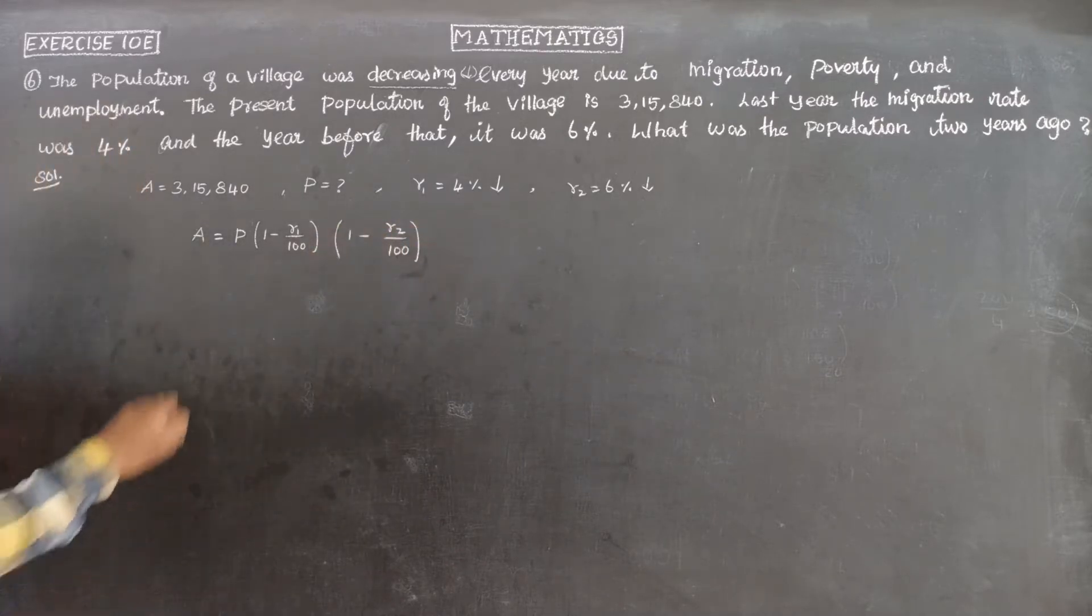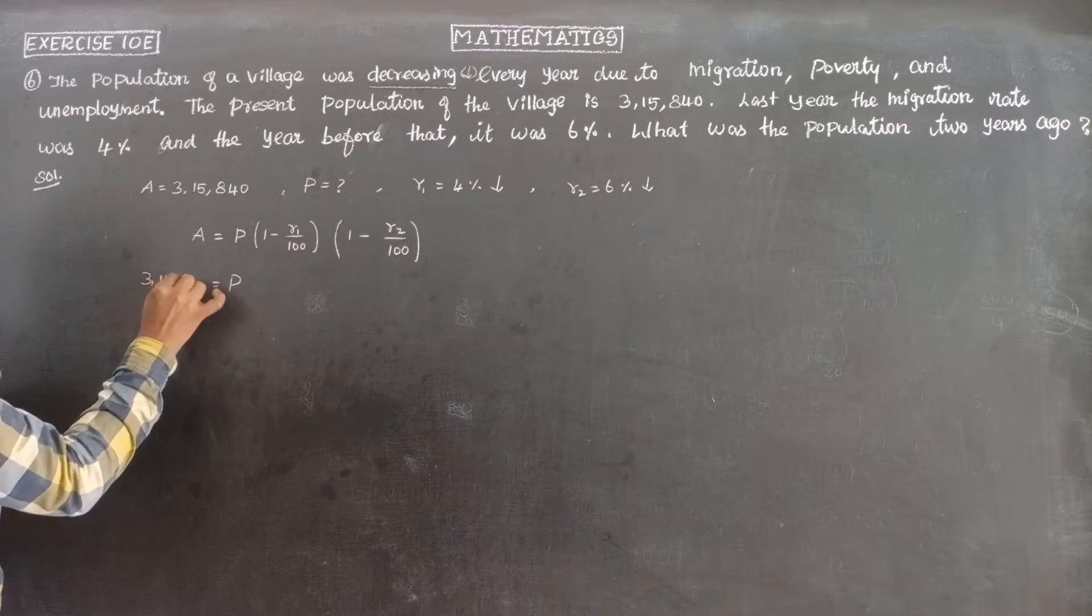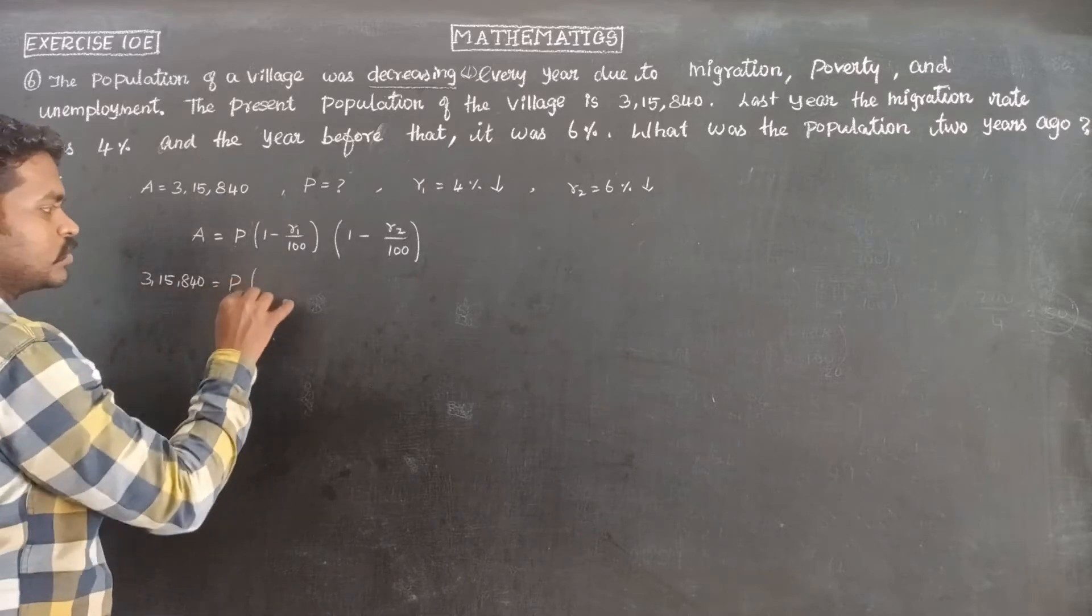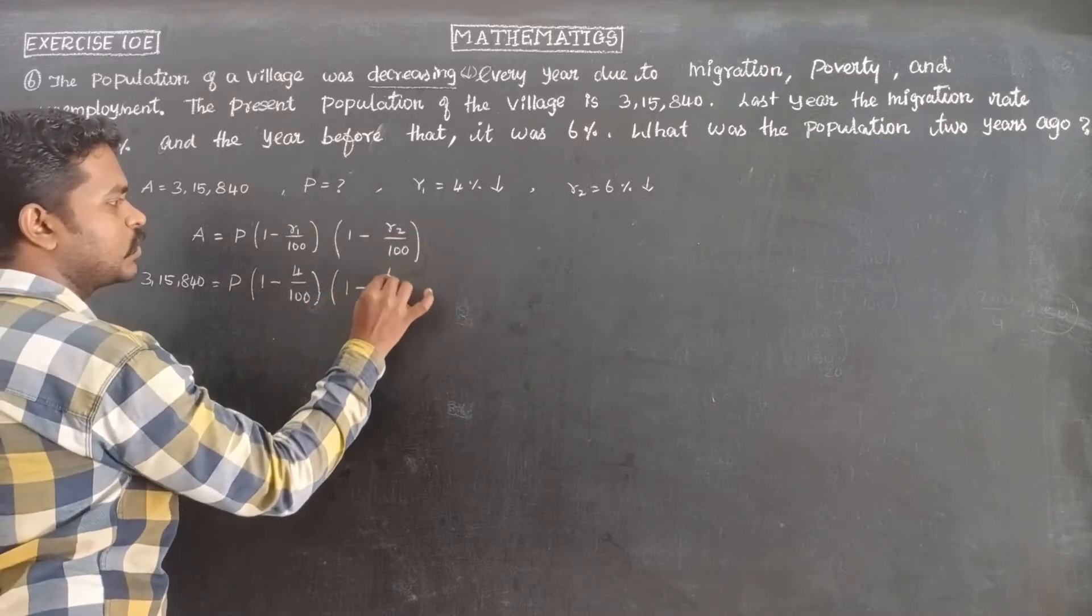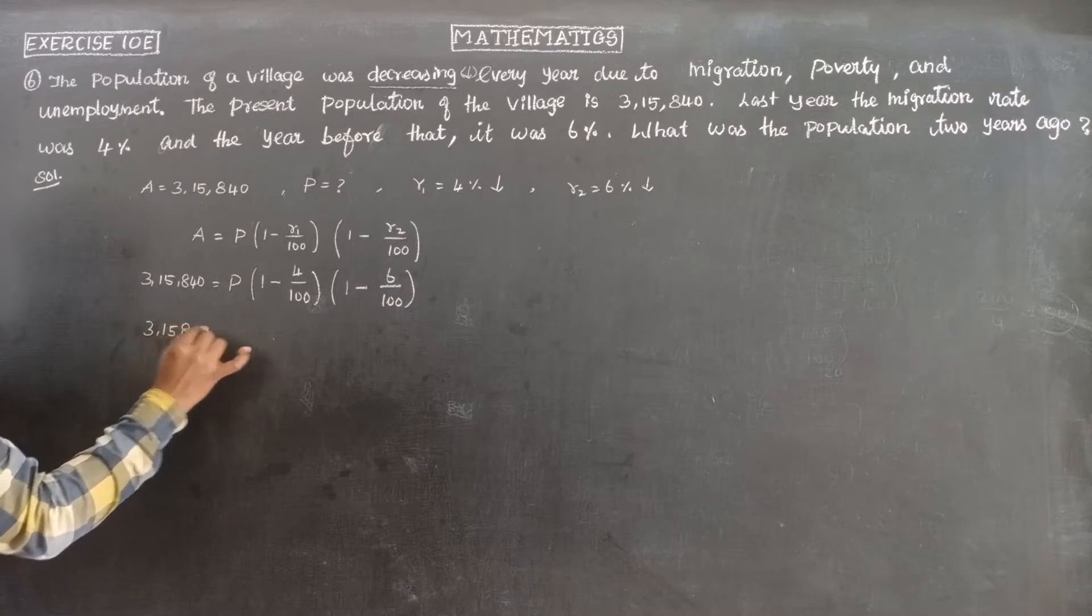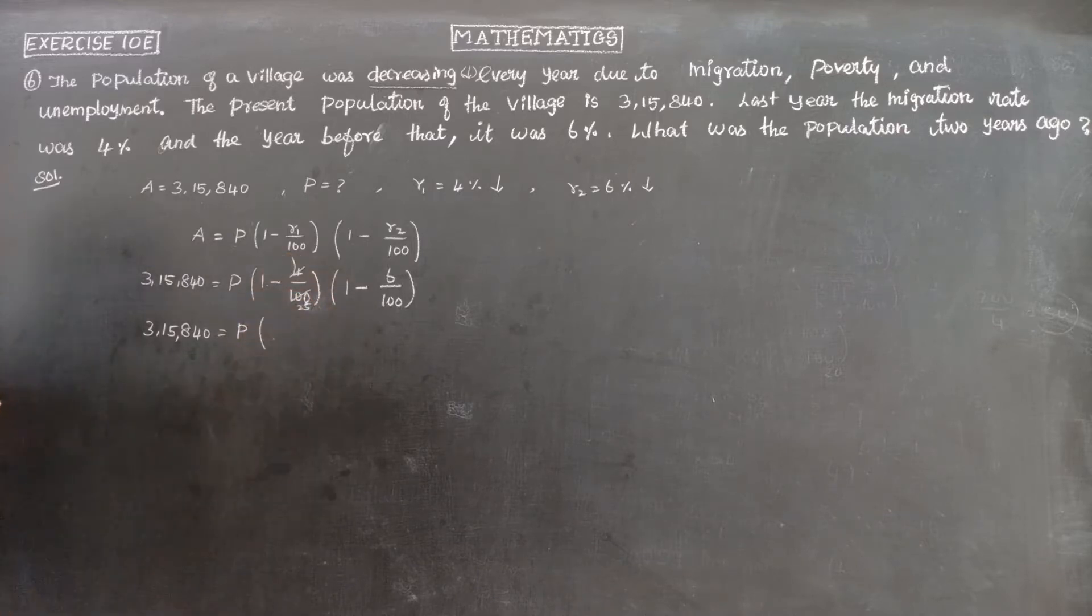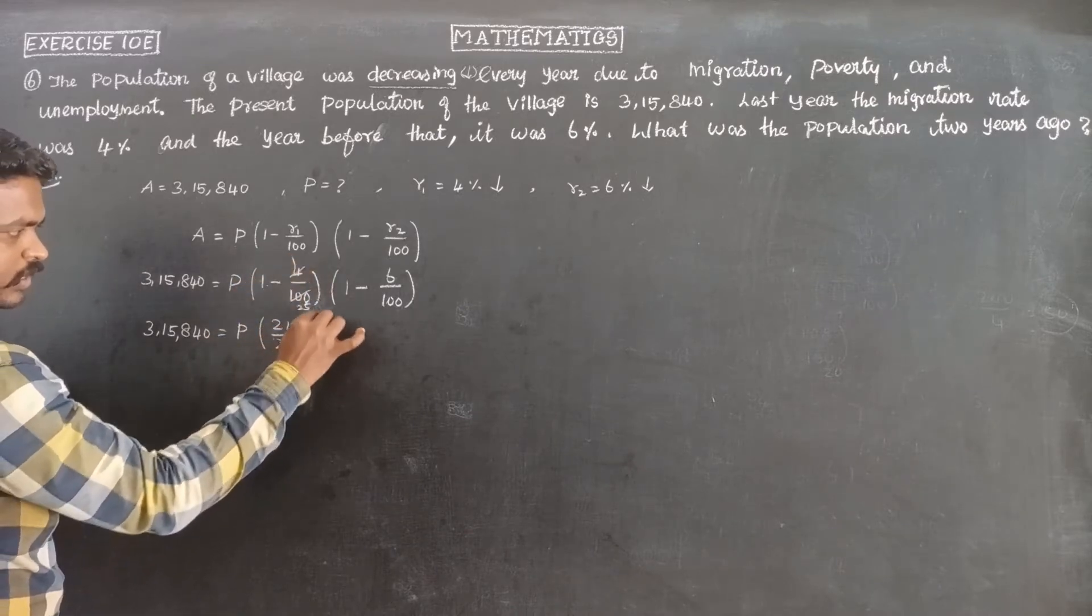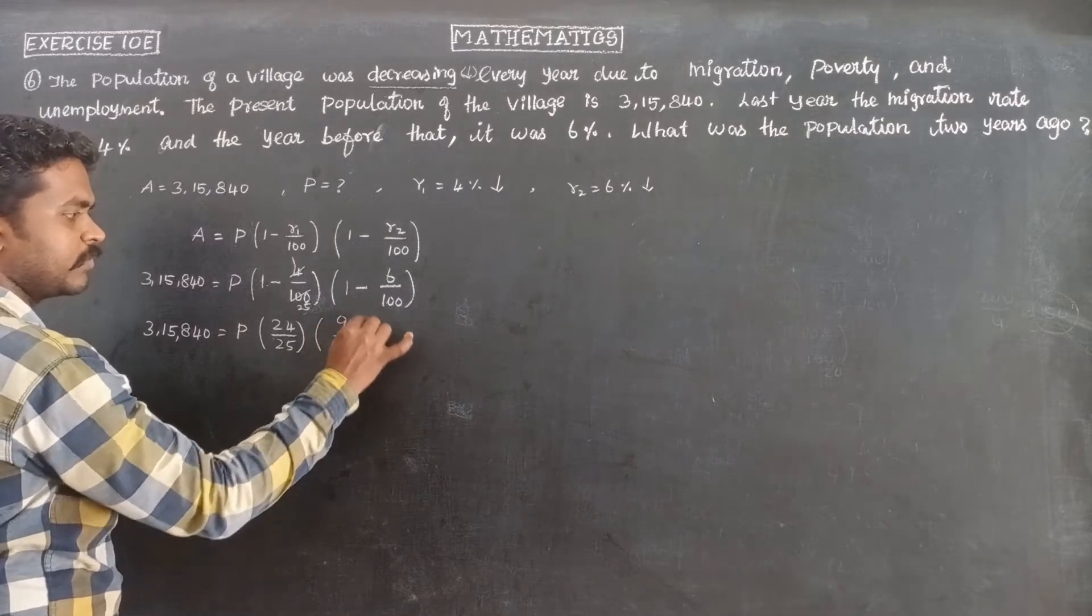With successive rates: 1 minus R1 by 100 times 1 minus R2 by 100. So to find the principal value from two years ago: A equals 3,15,840 equals P times (1 minus 4/100) times (1 minus 6/100).